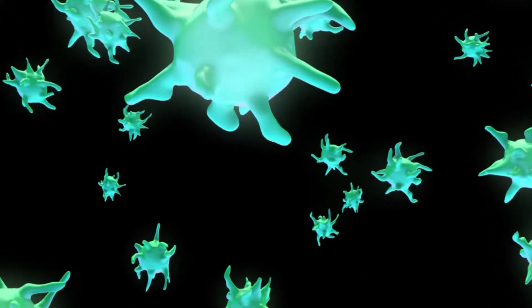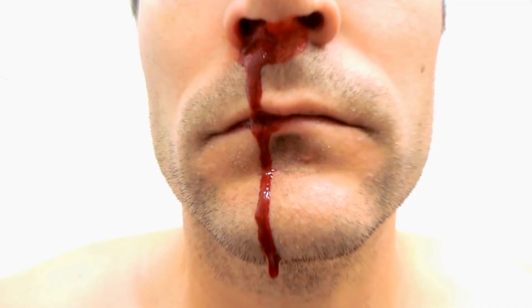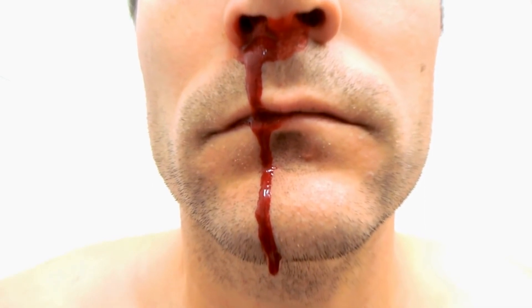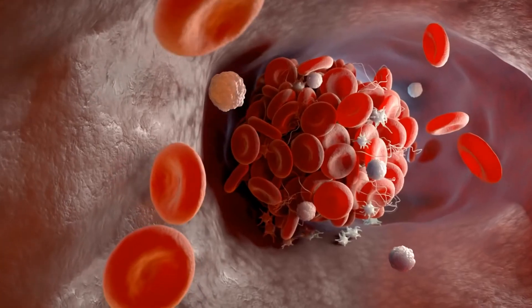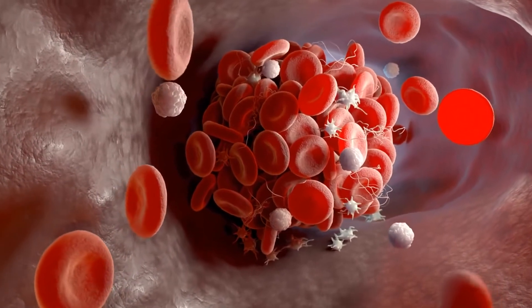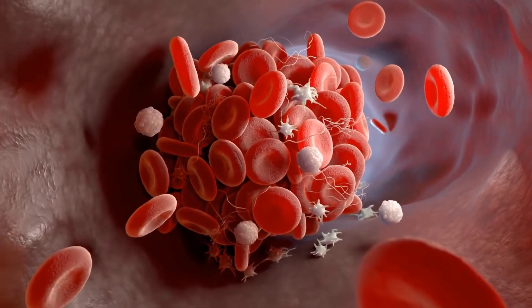Platelets prevent blood clotting. When your blood vessels are injured, you start to bleed. Your platelets stop the bleeding by clumping together and sealing the hole.